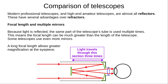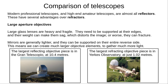Some telescope designs use even more mirrors. Reflectors also allow much larger aperture objective elements. Large glass lenses are heavy and fragile — they need to be supported only on their edges, and their weight can make them sag, distorting the image, or even fracture. Mirrors are generally lighter and thinner, and can be supported on their entire reverse side, not just the edges. This lets us use much larger objective elements and gather much more light. The largest reflecting objective, in the Gran Telescopio, is 10.4 meters across, while the largest refracting objective, in Yerkes Observatory, is just one tenth that size at 1.02 meters across.